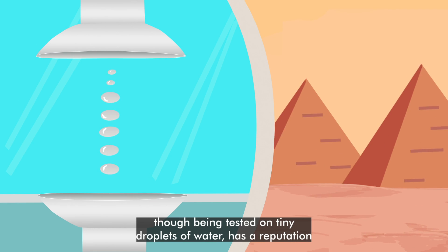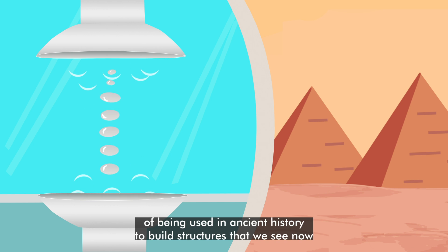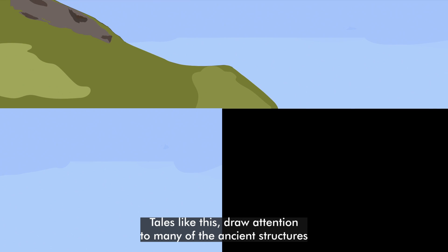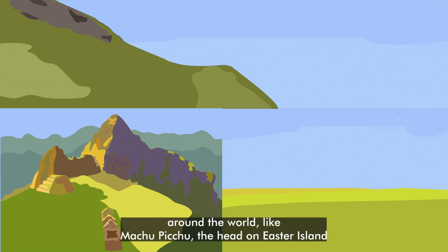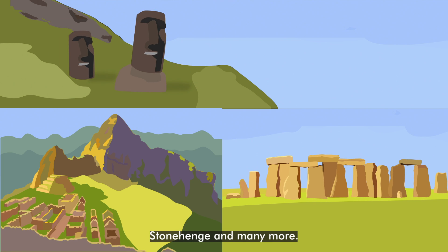Acoustic levitation, though being tested on tiny droplets of water, has the reputation of being used in ancient history to build structures that we see now. Tales like this draw attention to many of the ancient structures around the world like Machu Picchu, the heads on Easter Island, the Stonehenge, and many more.